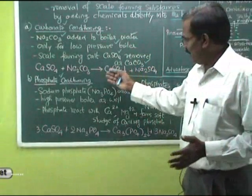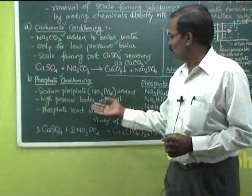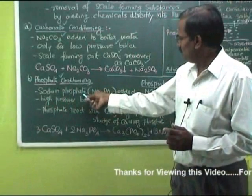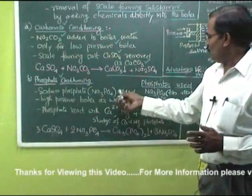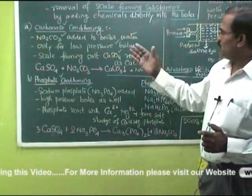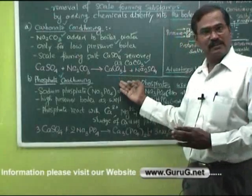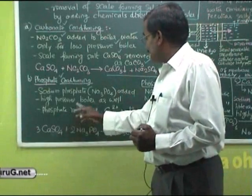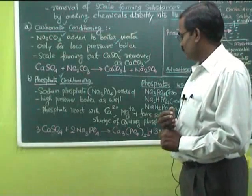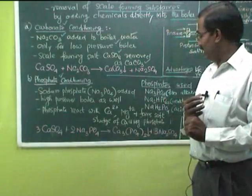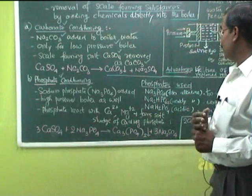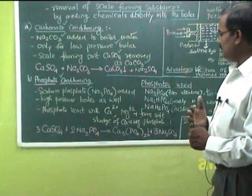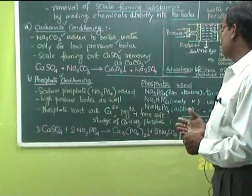The second method is phosphate conditioning. It is applicable for both low-pressure as well as high-pressure boilers. We are adding sodium phosphate in the place of sodium carbonate. The calcium sulfate scale-forming compound present in the boiler water reacts with sodium phosphate, forming water-insoluble calcium phosphate sludge. The sludge can be readily removed, so the hardness-causing calcium sulfate is removed as calcium phosphate sludge.